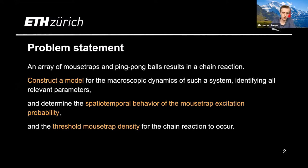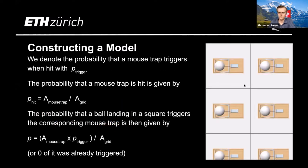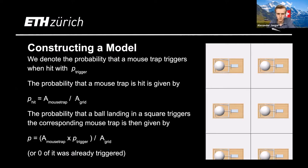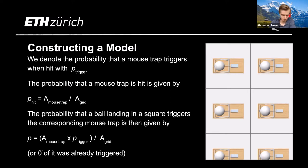For the first part, we focus on constructing a model. We begin by considering what such an array of mousetraps would look like — a grid on which we have all the mousetraps. We say that a mousetrap has a trigger probability when it is hit on the surface of p-trigger. If one of these squares is hit, the probability that the mousetrap itself is hit is given by the ratio of the area of the mousetrap divided by the area of the grid. The probability that a ball landing in a square triggers that mousetrap is given by the product of these two probabilities, or zero if it was already triggered.